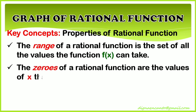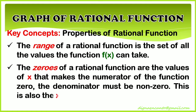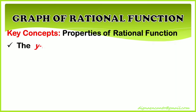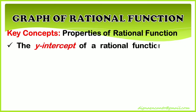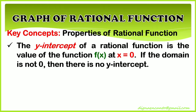The zeros of a rational function are the values of x that make the numerator of the function 0, while the denominator must be non-zero. This is also the x-intercept of the function. The y-intercept of a rational function is the value of f(x) at x equals 0. If 0 is not in the domain, then there is no y-intercept.